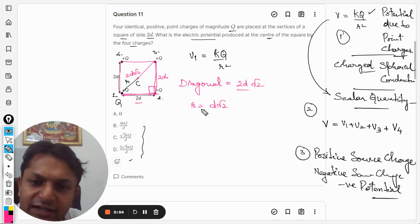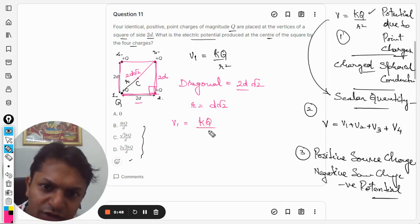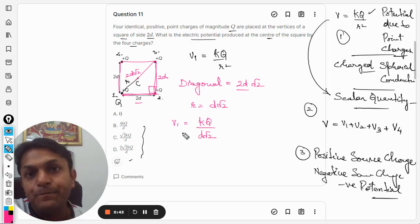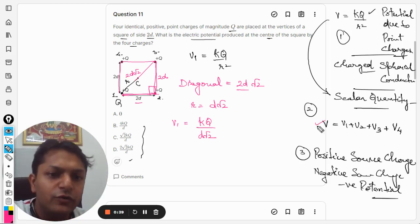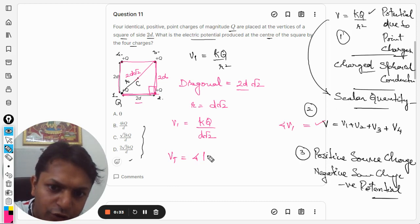So now I'm going to find v1. It will be kQ divided by r. Now v1 is equal to v2 is equal to v3 is equal to v4. If you want to find the total V, that should be equal to 4 times v1. It means V total will be 4 times this.